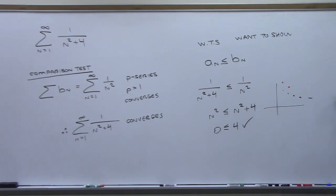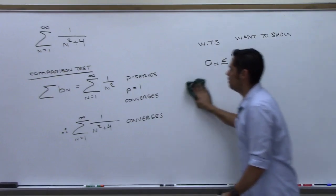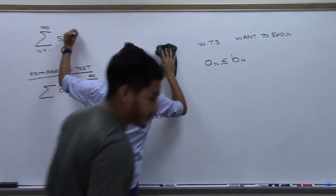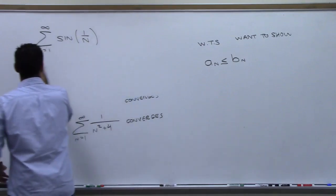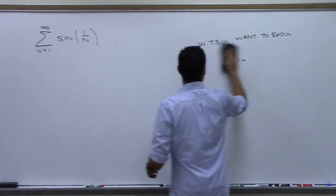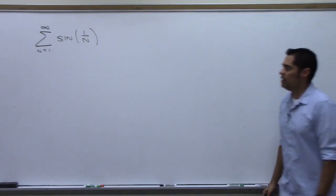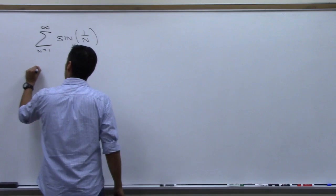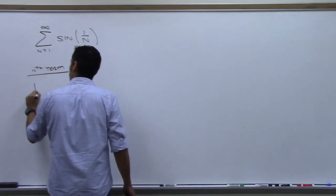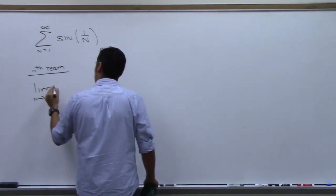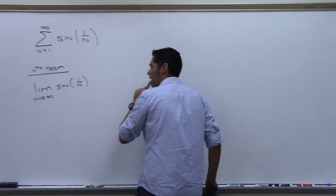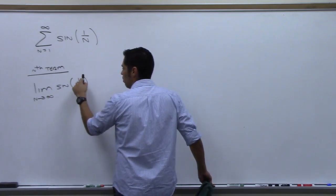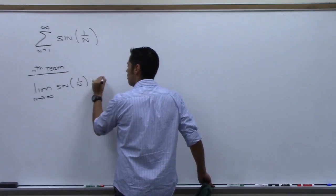How do you choose a different equation to compare it to when they give you a summation that's all crazy — like this one with sine of 1 over n? Let's do the nth term test first. Take the limit as n goes to infinity of sine(1/n). Since 1 over infinity goes to 0, and sine of 0 is 0, the test fails.